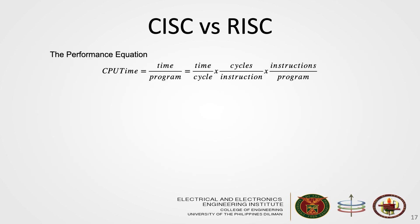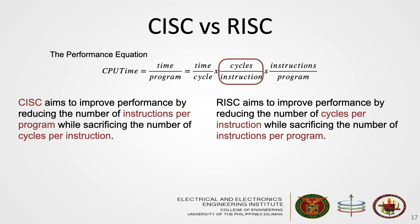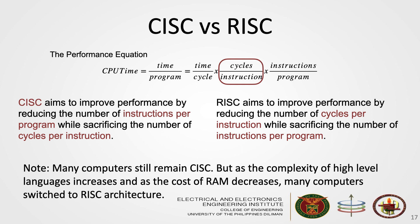The performance equation, or CPU time, computes the amount of time a program takes to execute. Both CISC and RISC architectures aim to reduce this performance parameter. CISC targets decreasing CPU time by decreasing instructions per program while sacrificing cycles per instruction. Many computers still remain CISC, but as the complexity of high-level languages increases and the cost of RAM decreases, many computers are switching to RISC architecture.